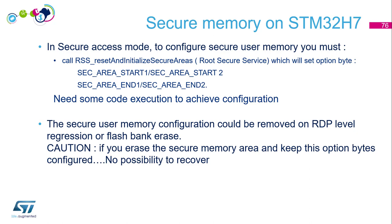In secure access mode, to configure the secure user memory area you also need to call Root Security System (RSS) services. That means you need firmware execution in order to configure the secure memory — this is quite different from the G0. Also note: the secure user memory configuration can be removed via RDP level regression or flash bank erase. But if you erase the secure memory area while keeping the option bytes configured, the debugger will be disabled because the device will attempt to start in the secure memory area without any code there, getting stuck with no possibility to recover.